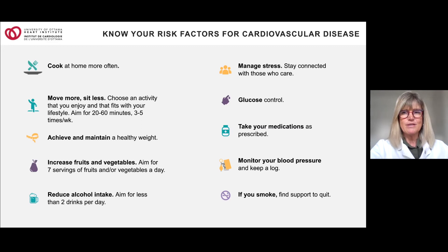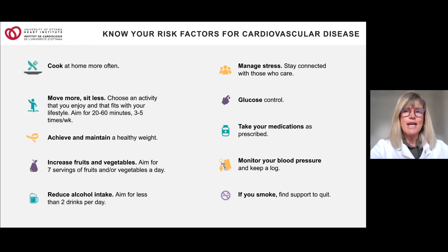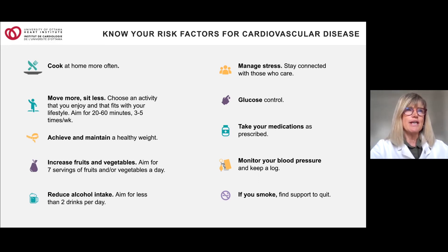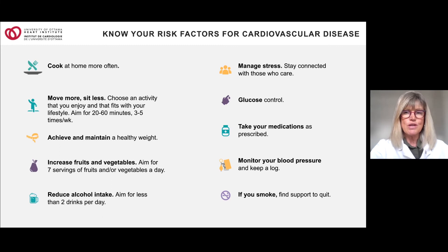Achieve and maintain a healthy weight — it's actually worse to lose and regain weight repeatedly than to stabilize at a level where you can be active and happy. Aim for seven servings of fruits and vegetables per day. Reduce your alcohol intake to less than two drinks a day. Manage your stress and stay connected with those who care. At the Heart Institute, we have a whole mental health team offering group sessions on managing emotions and stress management. Reach out to your mentor to be signed up.